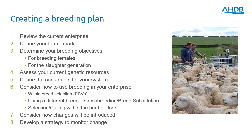There are a few steps to go through in creating the plan. The first is to review your current enterprise — think about your strengths and your weaknesses, assess the KPIs for the enterprise, and then define the market that you're breeding for in the future. What is it that your buyers are going to want? Set some breeding objectives both for the breeding females and the slaughter generation, and assess your current genetic resources — think about the ewes and cows you have and how you may want those genetics to change.